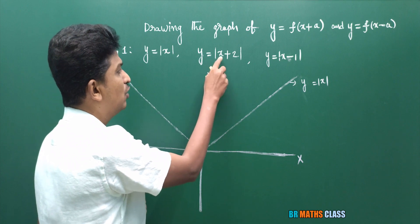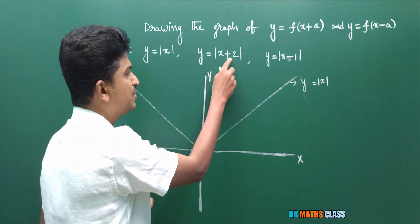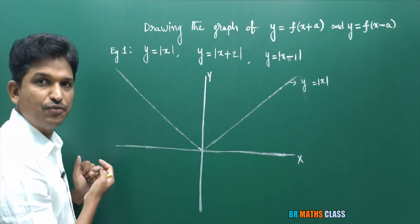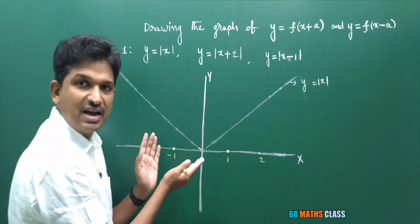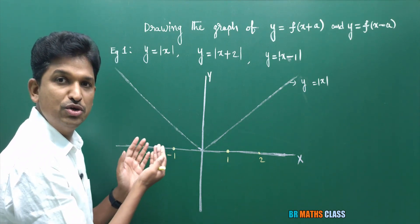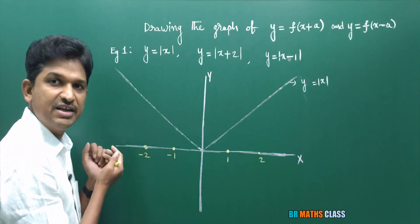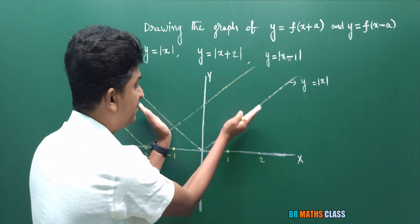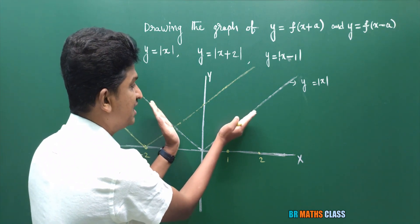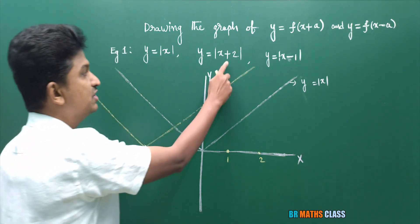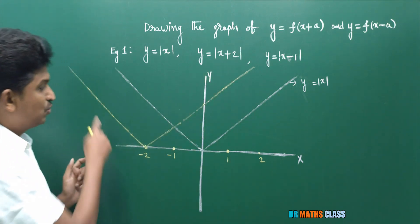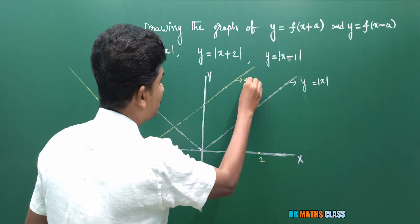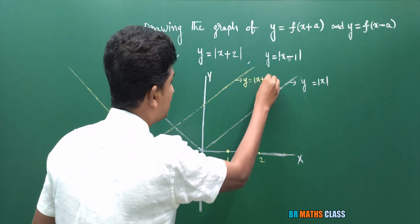Here mod x is known. To draw the graph of modulus of x+2, plus 2 is there, so shift this graph two units towards the left — move this graph symmetrically through two units towards the left. The resulting graph is the graph of modulus of x+2. I shifted this graph symmetrically towards the left through two units because plus 2 is there.